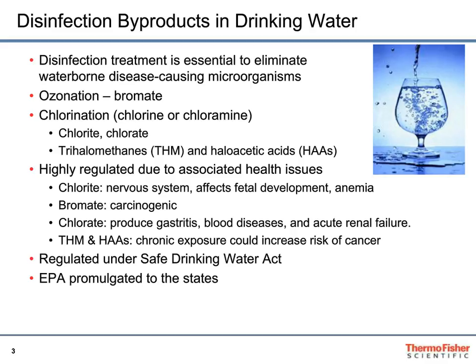These are highly regulated because of the associated health issues. For example, chlorite can affect fetal development and affects the nervous system. Bromate, of course, is carcinogenic. Chlorate is associated with blood diseases and renal failure. The haloacetic acids and trihalomethanes are associated with chronic exposure that could increase risk of cancer, more typically associated with bladder cancer. The statement is that if it's above the maximum contamination level, that's when they have concerns about the chronic exposure. Of course, they are regulated under the Safe Drinking Water Act, and the EPA has promulgated it to the states.